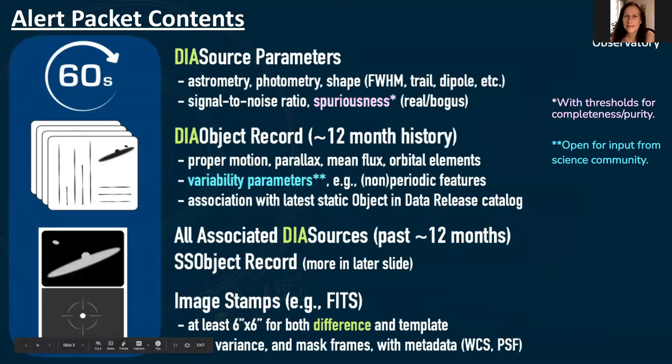The Prompt Processing Pipeline generates and releases one alert packet per DIA source within 60 seconds of image readout. The alert packet is essentially an ASCII file containing everything the pipeline was able to measure or characterize about the DIA source. This will include astrometric and photometric parameters such as the size, shape, and flux of the DIA source, as well as its signal-to-noise ratio and a spuriousness parameter, also referred to as a real-bogus parameter.